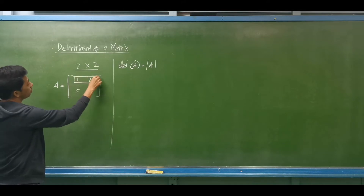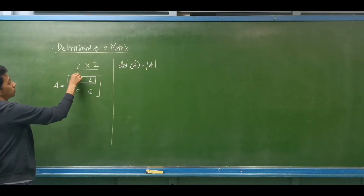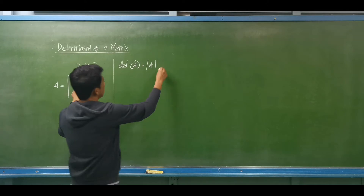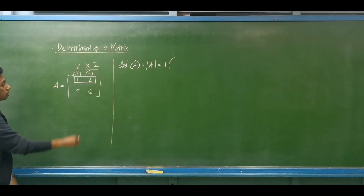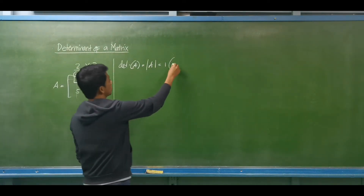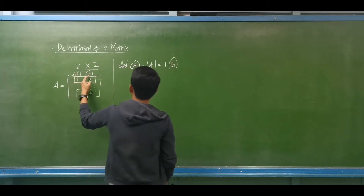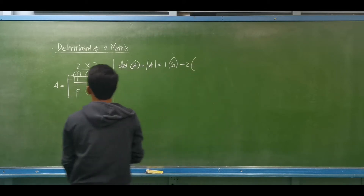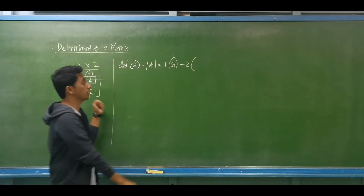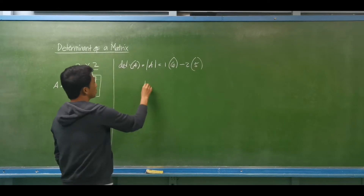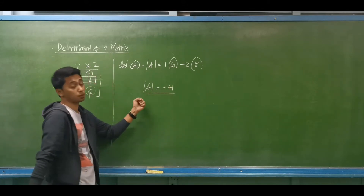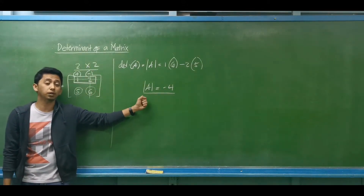I will be using row number 1. For cofactors, don't forget the alternating signs: positive, then negative. The first element is 1. What is the cofactor of 1? All you have to do is delete the first row and first column — the remaining element is 6. Then, negative: the cofactor of 2 requires crossing out the first row and second column, leaving 5. So the determinant of matrix A is 6 minus 10, which is negative 4. This is the concept of the Laplace or cofactor expansion.